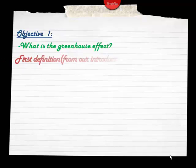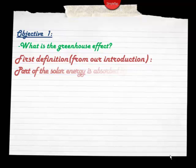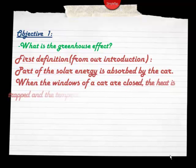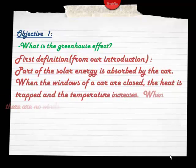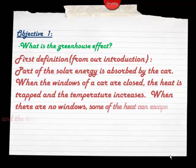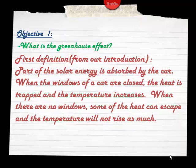So what is the greenhouse effect? From our introduction with those cars, we could say that part of the solar energy is absorbed by the car. When the windows are closed, the heat is trapped and the temperature increases. When there are no windows, some of the heat can escape and the temperature will not rise as much.